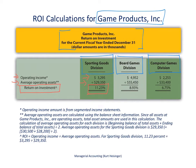Comparing across divisions, the board games division had an ROI of 8.93%, and the computer games division had an ROI of 6.75%. As a result, we can conclude that the sporting goods division had the highest ROI and therefore made the best use of their average operating assets for the year ended December 31.